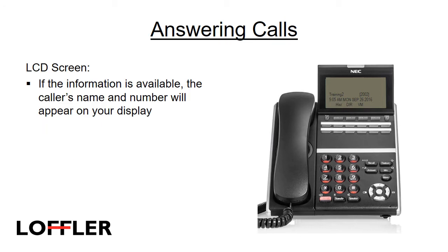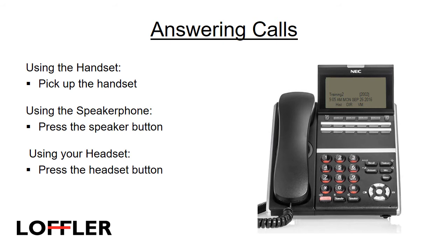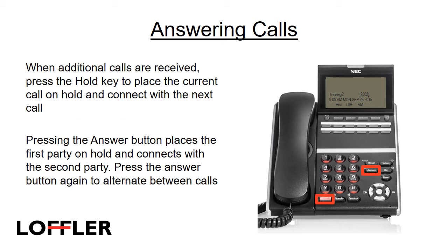While a call is ringing your extension, you'll hear the ringtone and the message indicator light will flash. If caller ID information is provided, the caller's name and number will appear in the display. To answer using your handset, pick up the handset. To answer using your speakerphone, press the speaker button. To answer using your headset, press the programmed headset button. When additional calls are received, press the hold key to place the current call on hold and connect with the next call. Pressing the answer button places the first party on hold and connects with the second party; press it again to alternate between calls. This only works with external calls.